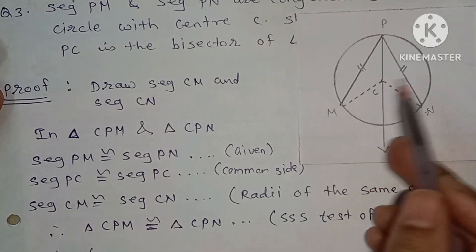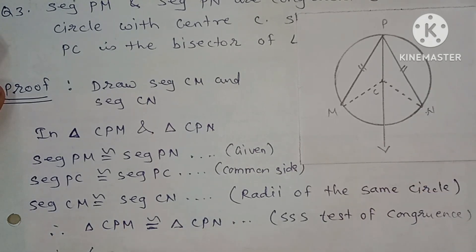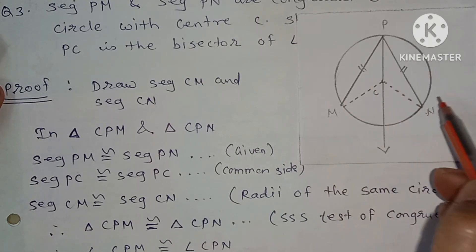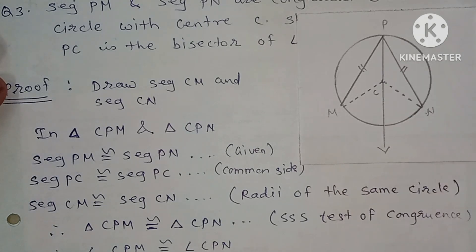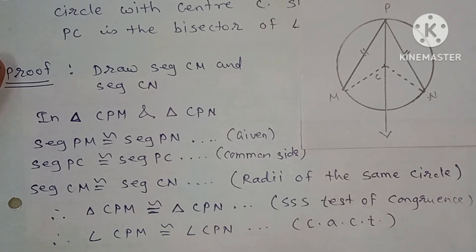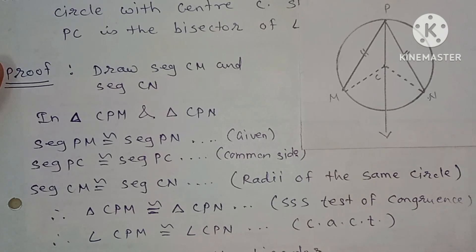These two triangles are congruent by the SSS test of congruency. Therefore angle CPM is congruent to angle CPN. These two angles are congruent by CACP — congruent angles of congruent triangles.